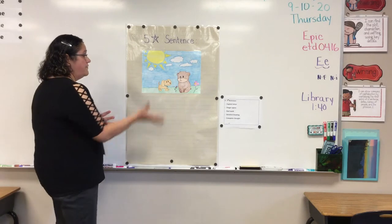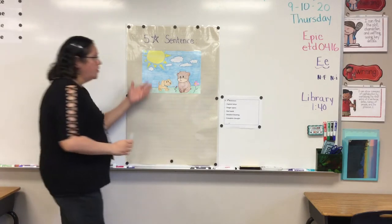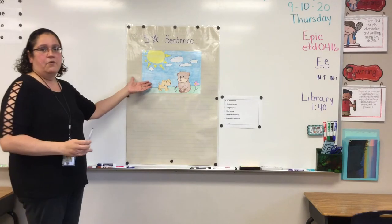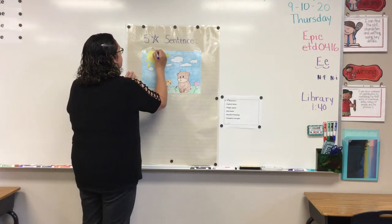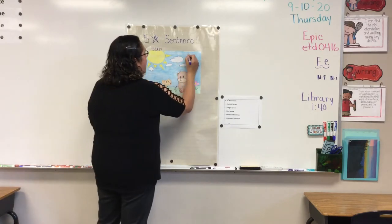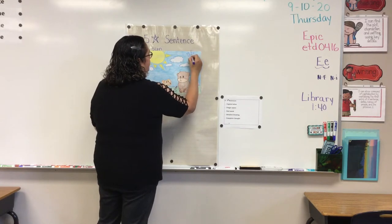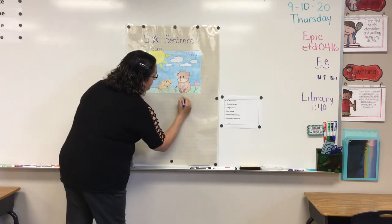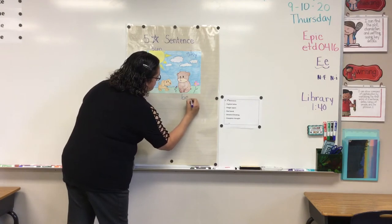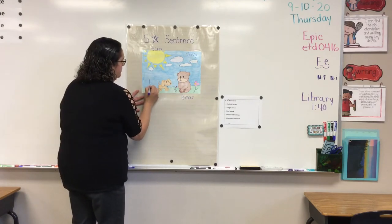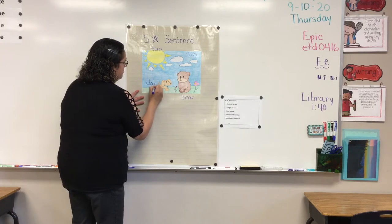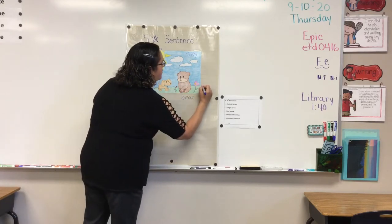So, before we write our sentence, we're going to label our picture. For example, I can label the sun, the sky, the bear, the dog, and the flower.